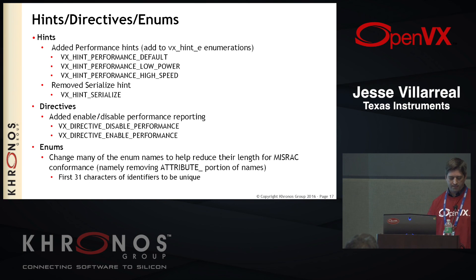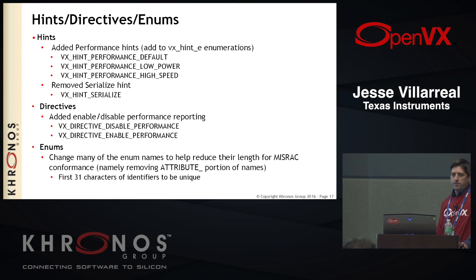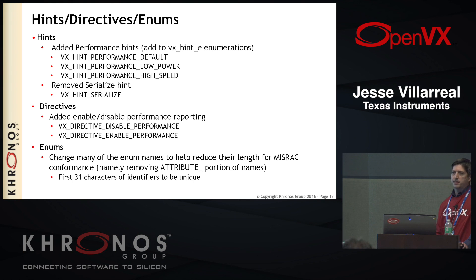We do have shipping with the spec a header file — VX compatibility. So all these things that I said we've removed — the access, the commit, the add kernel, these enumerations — we've put all of those into this compatibility header file so that existing implementations, as they're making the change, can still have this compatibility header file so that applications may not have to change right away as well. It's kind of a deprecation feature.